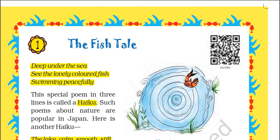Deep under the sea, see the lovely colored fish swimming peacefully. The meaning is clear, friends — under the sea, the sea is very deep and very colorful fish are swimming very peacefully.